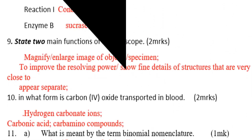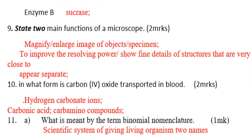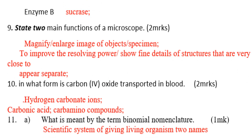The main functions of a microscope: number one, to magnify or enlarge images of objects or specimens; number two, to improve the resolving power and show fine details of structures that are very close together and appear separate. Number ten: in what form is carbon dioxide transported in blood? That is hydrogen carbonate ions.